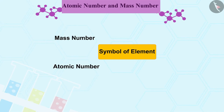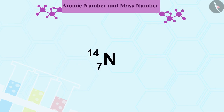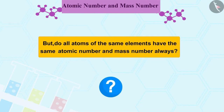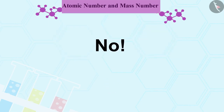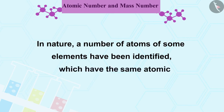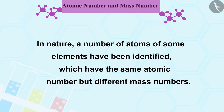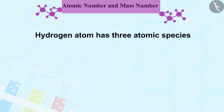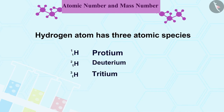In the notation for an atom, the atomic number, mass number and symbol of the element are to be written in a specific format, such as nitrogen is written like this. But do all atoms of the same elements always have the same atomic number and mass number? No. In nature, a number of atoms of some elements have been identified which have the same atomic number but different mass numbers. For example, take the case of hydrogen atom — it has three atomic species: protium, deuterium, and tritium. They all have the same atomic number but the mass numbers are 1, 2, and 3 respectively.